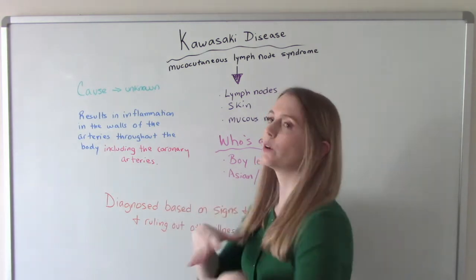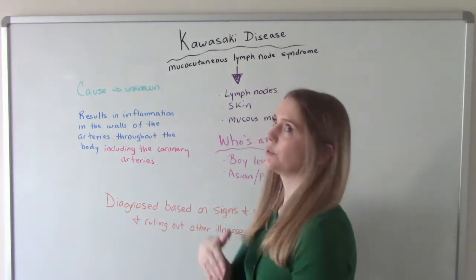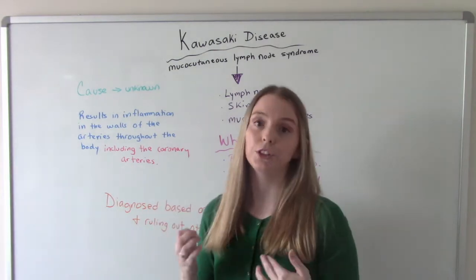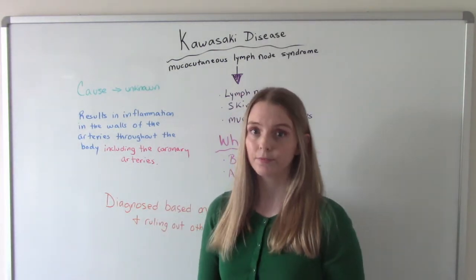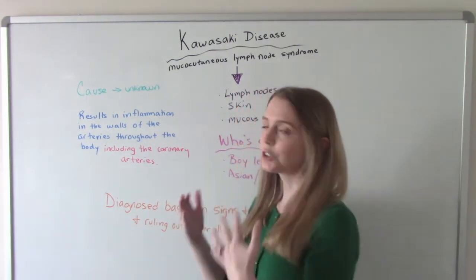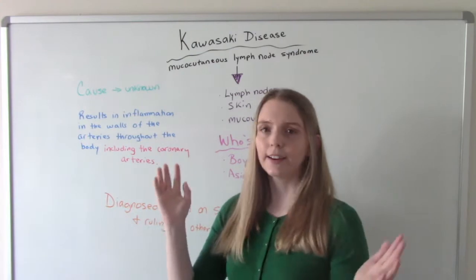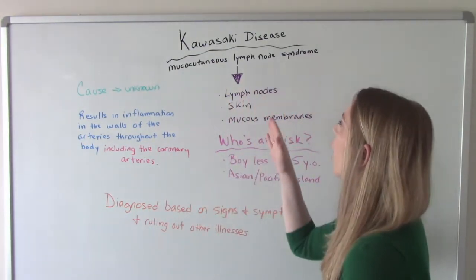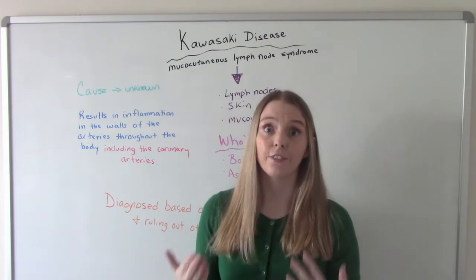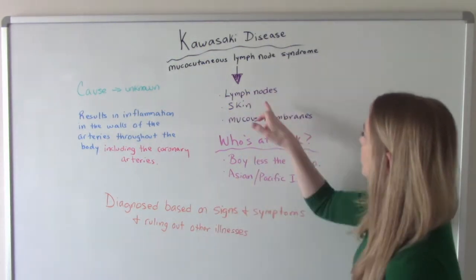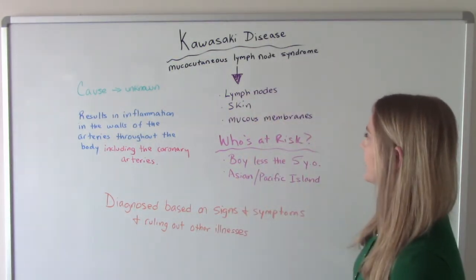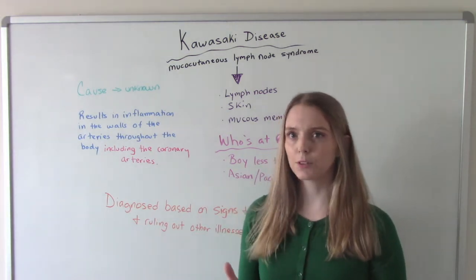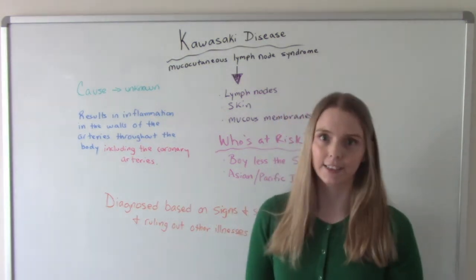This disease, if we don't do anything about it or we do something about it too late, can cause long-term damage to the child's heart. And the crazy long name is just letting you know all the other parts of the body that are affected: the lymph nodes, the skin, and the mucous membranes. And when we start talking about the signs and symptoms, you're going to see how these are all affected.